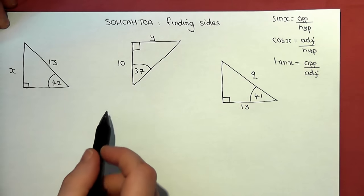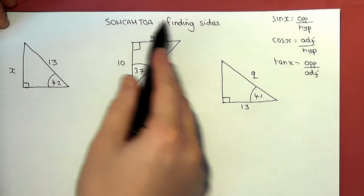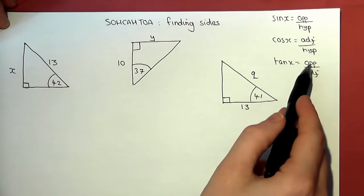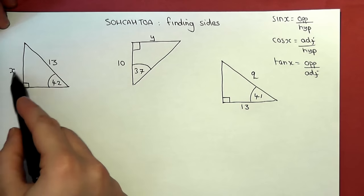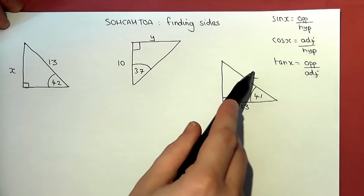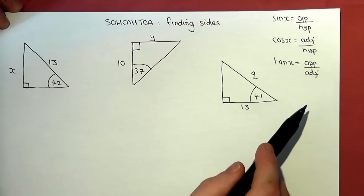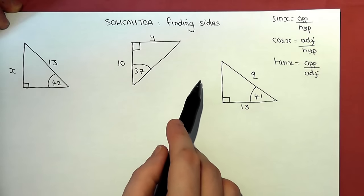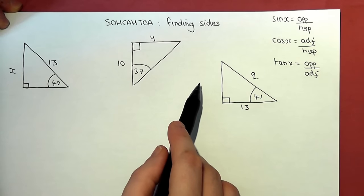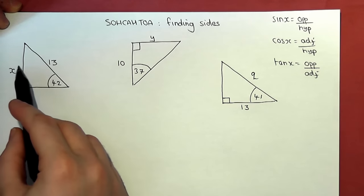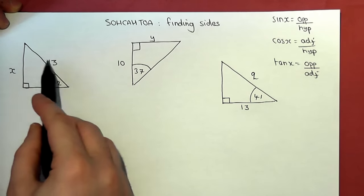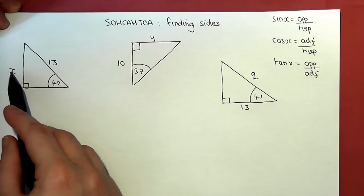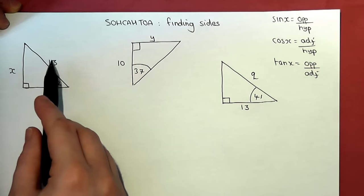This video looks at using the SOH CAH TOA equations to find missing sides when we know one angle and one side. The first step is always to identify which sides are involved — which one is the unknown and which one is the known.